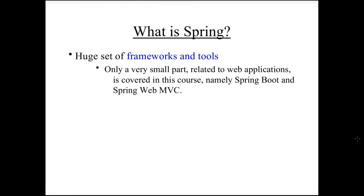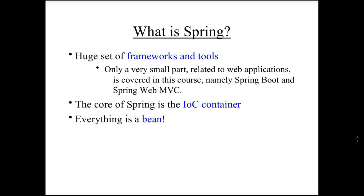I'll introduce another Spring framework, namely the Spring IOC container, which is the very core of Spring. That was actually the first thing developed — that's where Spring actually started, with this container. The idea is that everything — every class, object, or framework — can be represented as a bean, and a bean is essentially a Java object, more or less any Java object.